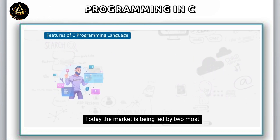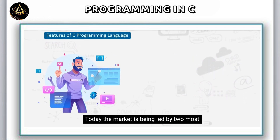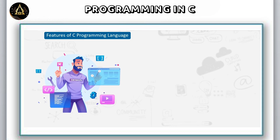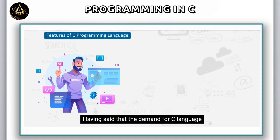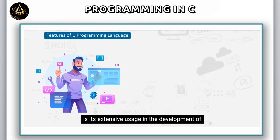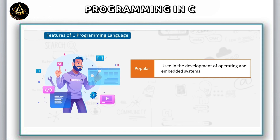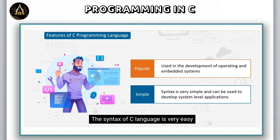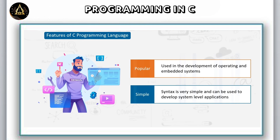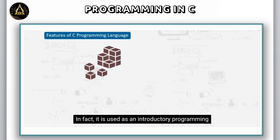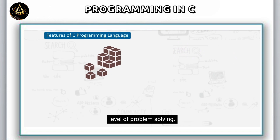Today the market is being led by two most popular languages, Java and Python. Having said that, the demand for C language has not come down a bit. The reason behind this is its extensive usage in the development of operating and embedded systems. The syntax of C language is very easy and can be efficiently used to develop many system level applications. In fact, it is used as an introductory programming language taught at the beginner level of problem solving.